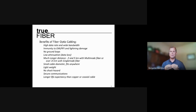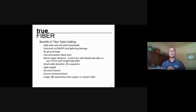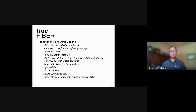Another big advantage is the very small cable diameter. High-count copper cabling can be very large and heavy with hundreds of conductors, but fiber optic cable can be made in a much smaller diameter — easier to install and fitting into tighter spaces. There's also no shock hazard since it's glass transmitting light, connections are very secure and hard to tap, and fiber optic cable has a longer life expectancy than copper or coaxial cable.